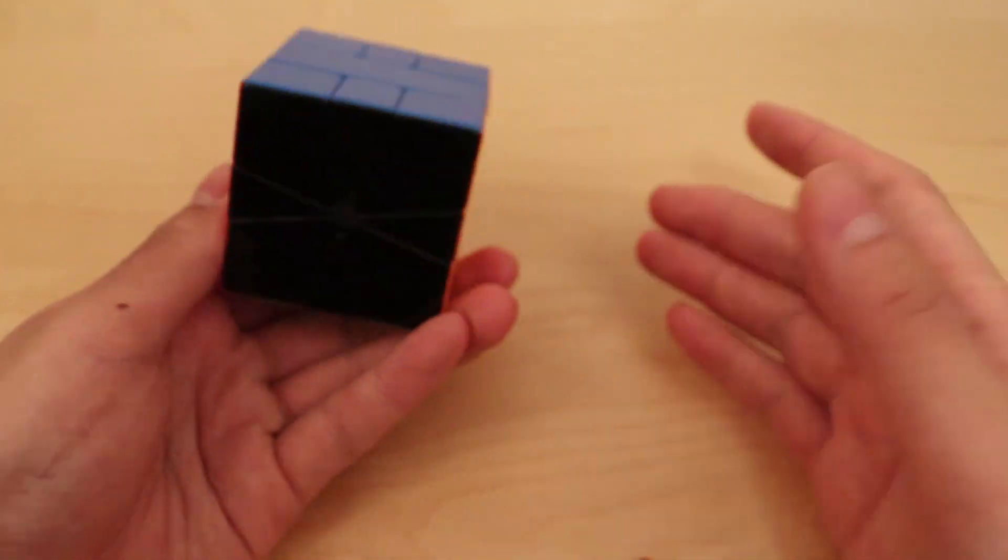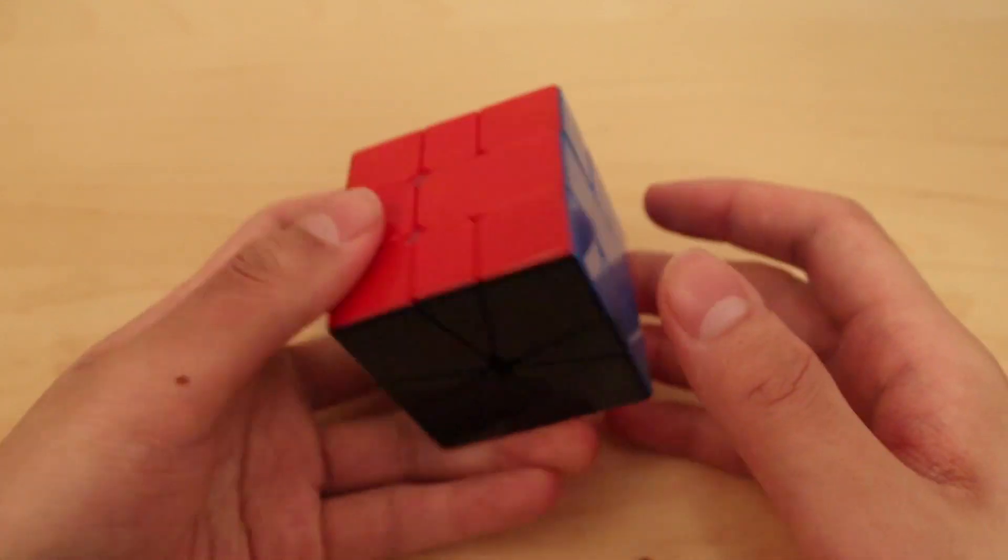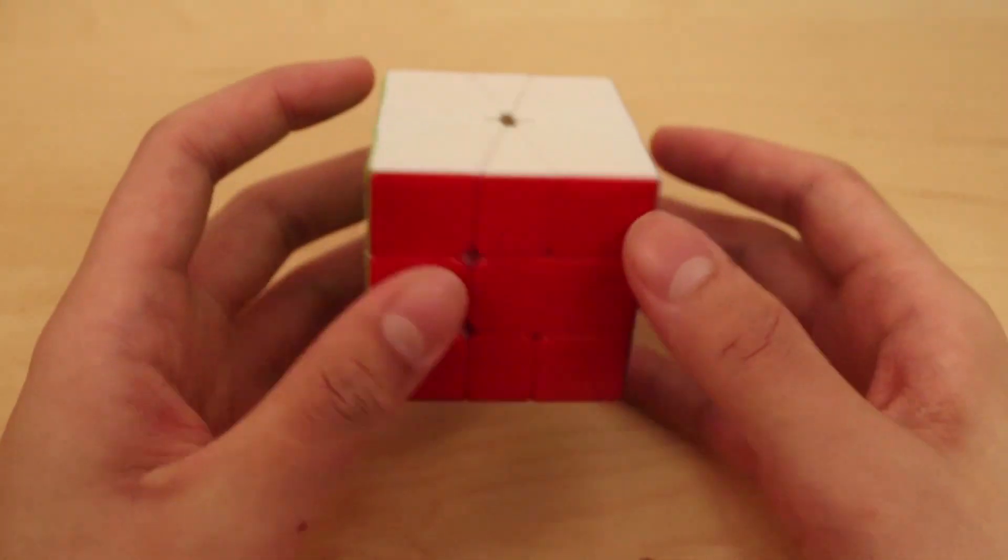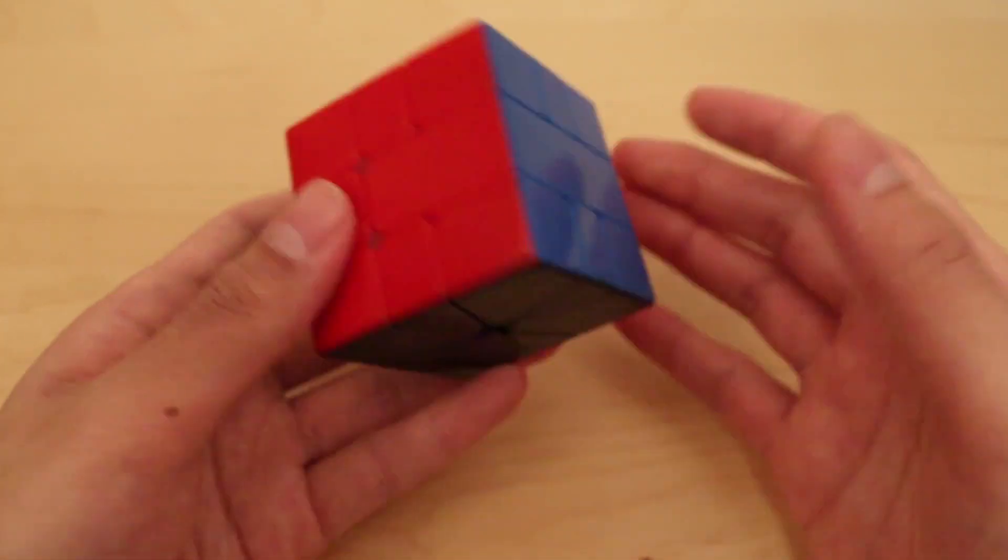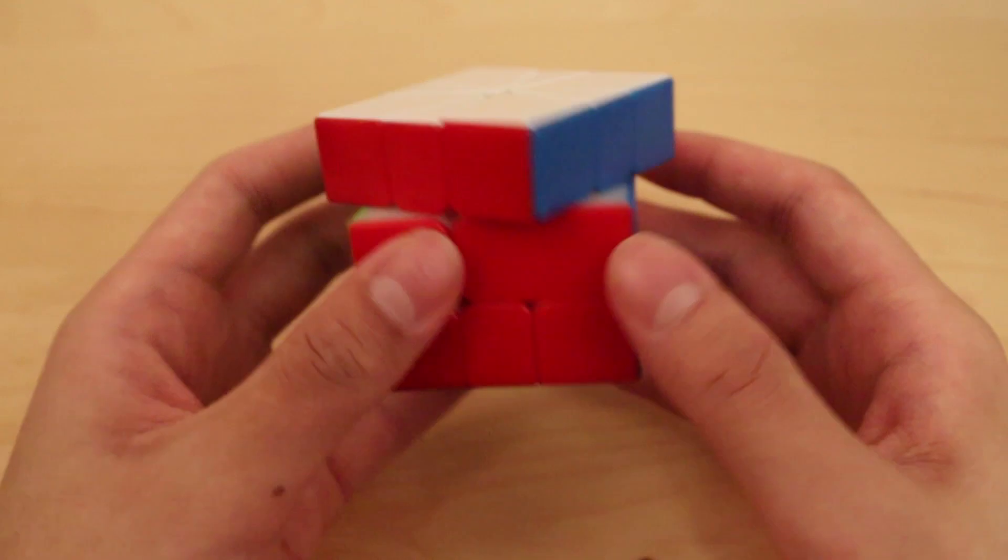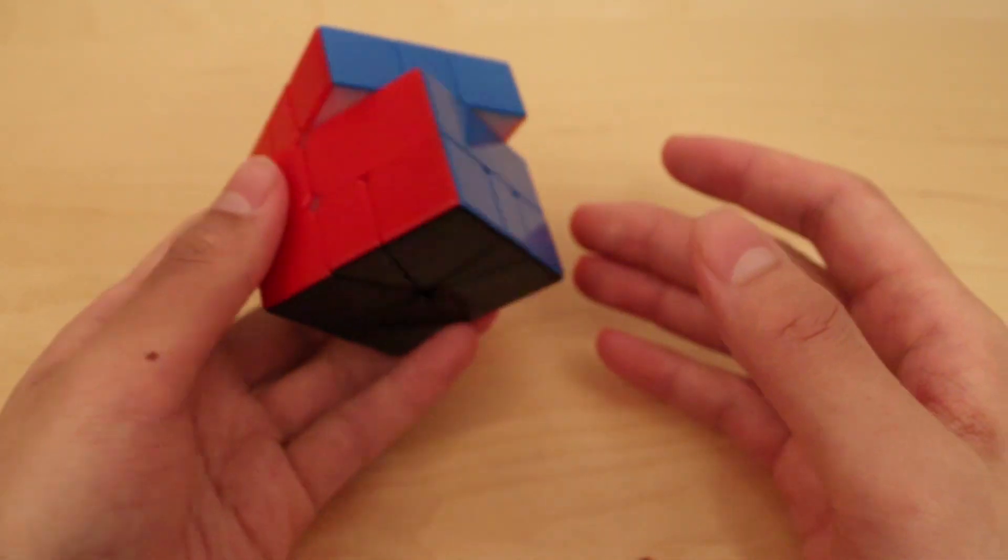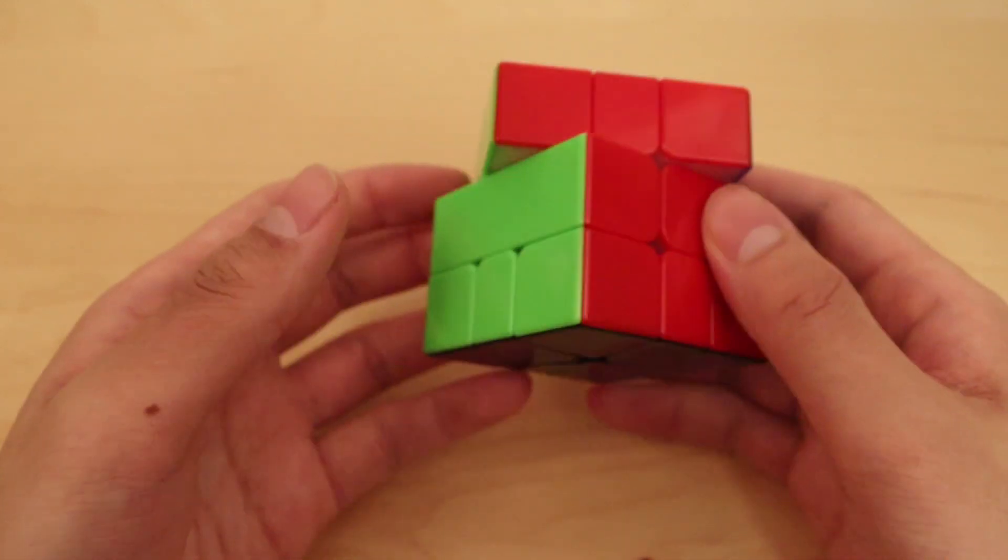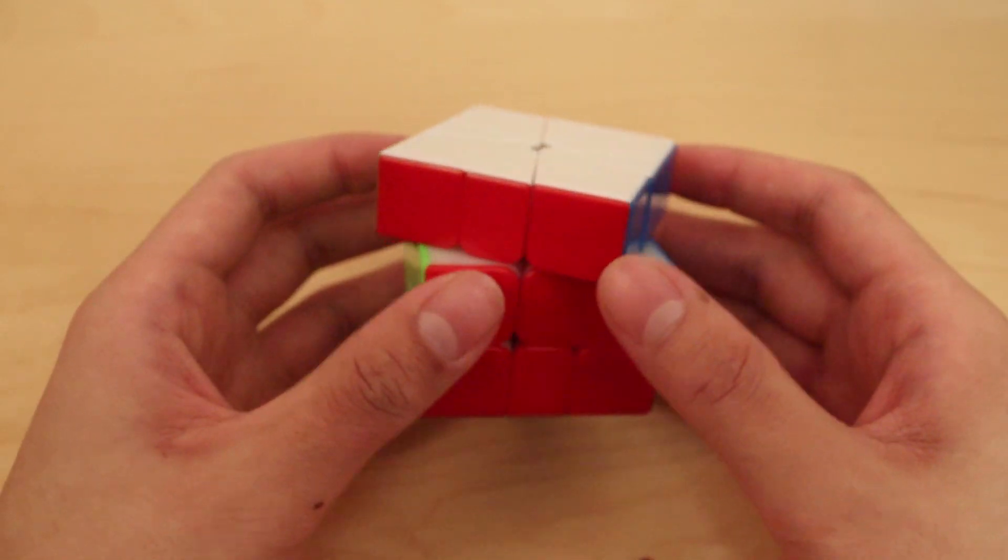When a lot of people think of Square One, they might think of memorizing a million algs and EP, which is the last alg of Square One with around 100 cases. So newer Square One solvers might believe you have to memorize an algorithm for each one of those. However, I can guarantee you that learning EP algs is pretty dumb and not really important to solving Square One.